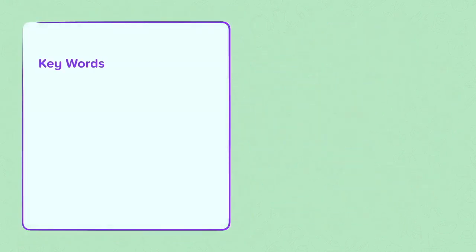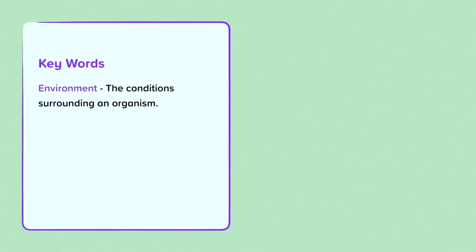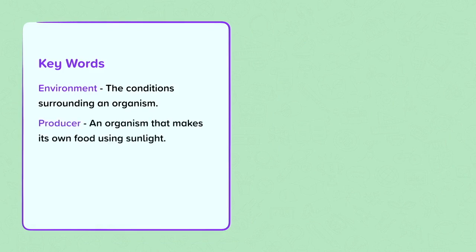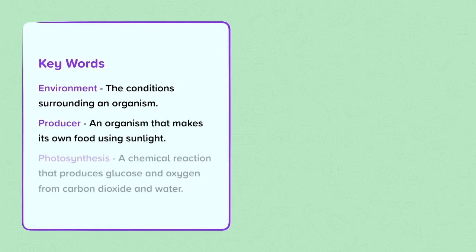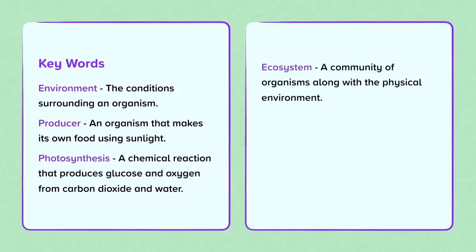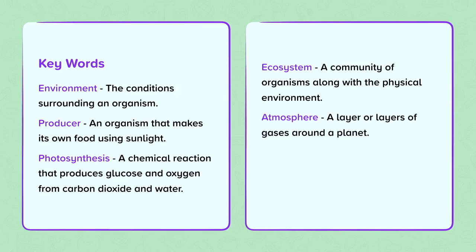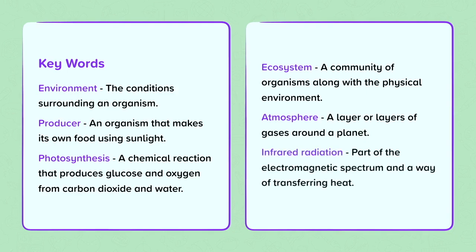Keywords: Environment — the conditions surrounding an organism. Producer — an organism that makes its own food using sunlight. Photosynthesis — a chemical reaction that produces glucose and oxygen from carbon dioxide and water. Ecosystem — a community of organisms along with the physical environment. Atmosphere — a layer or layers of gases around a planet. Infrared radiation — part of the electromagnetic spectrum and a way of transferring heat.